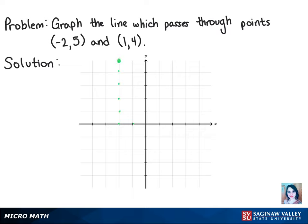And then for our second point, we'll go to the right on the x-axis 1, and then up 4. And then connecting those points will give us our line.